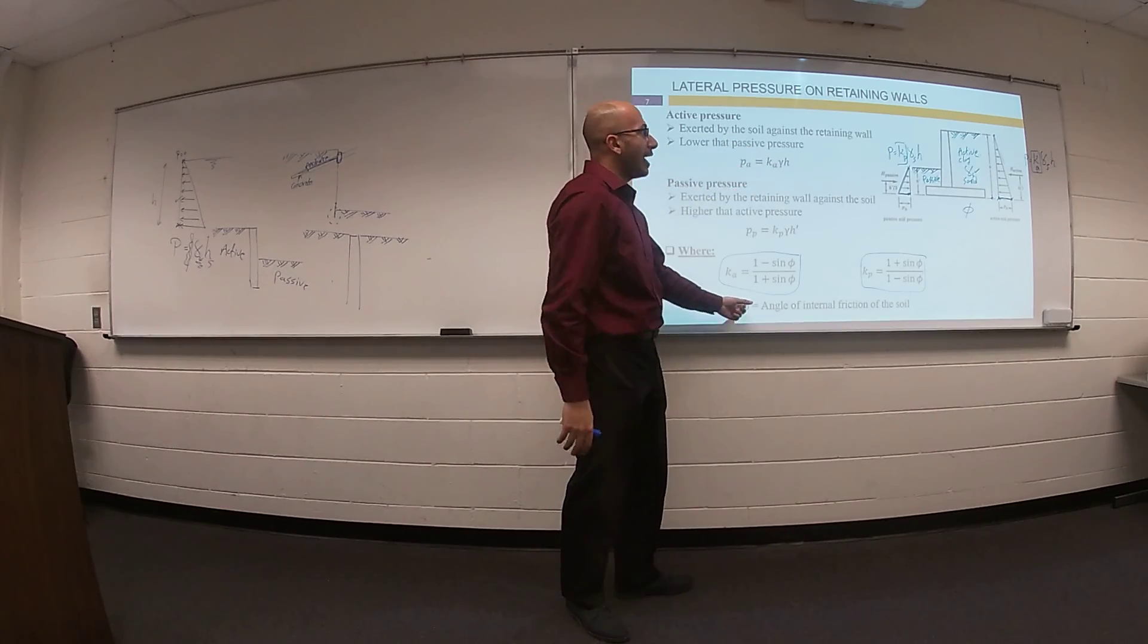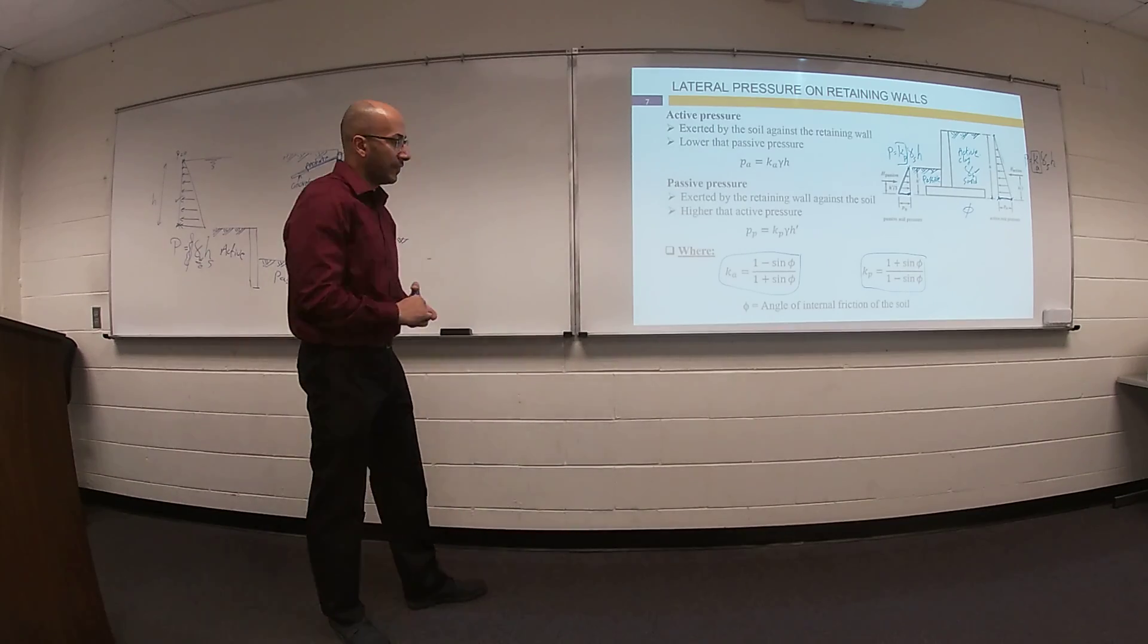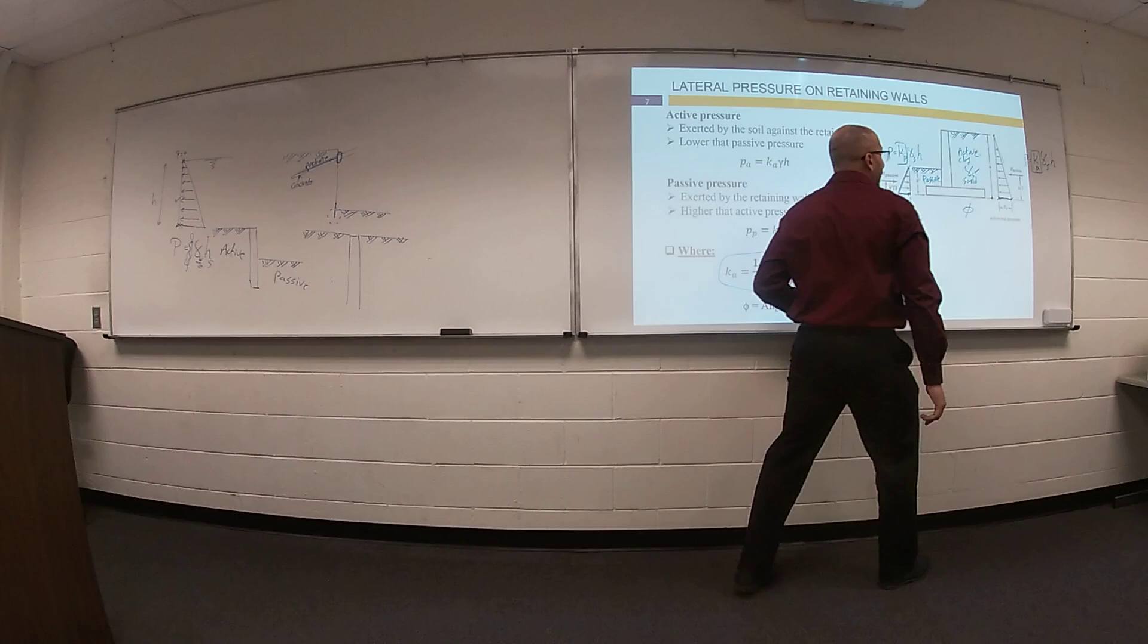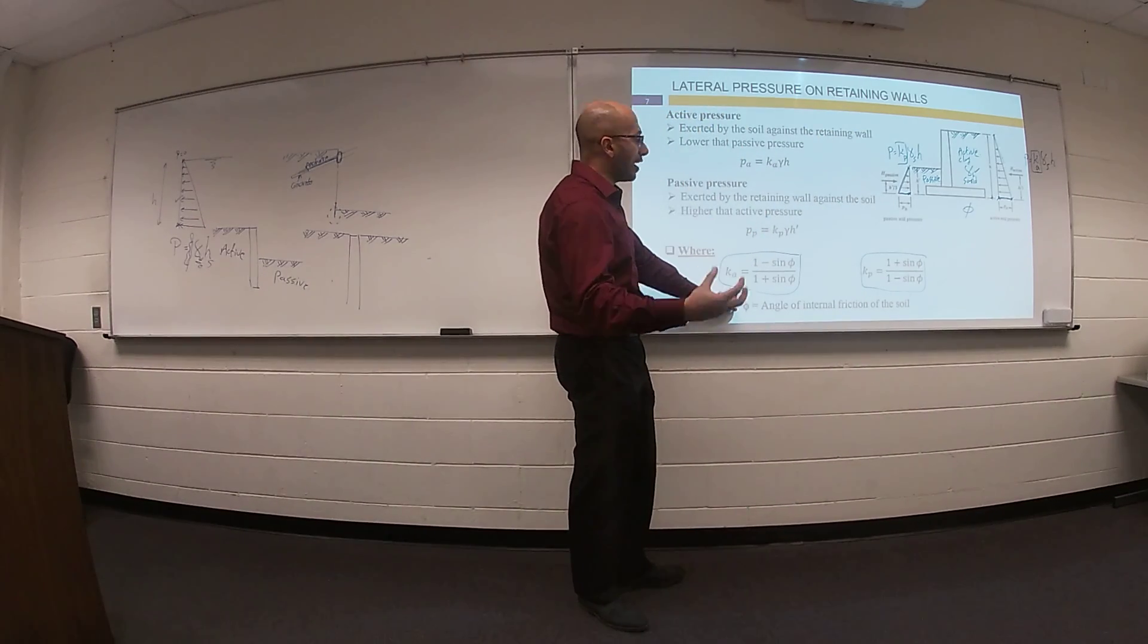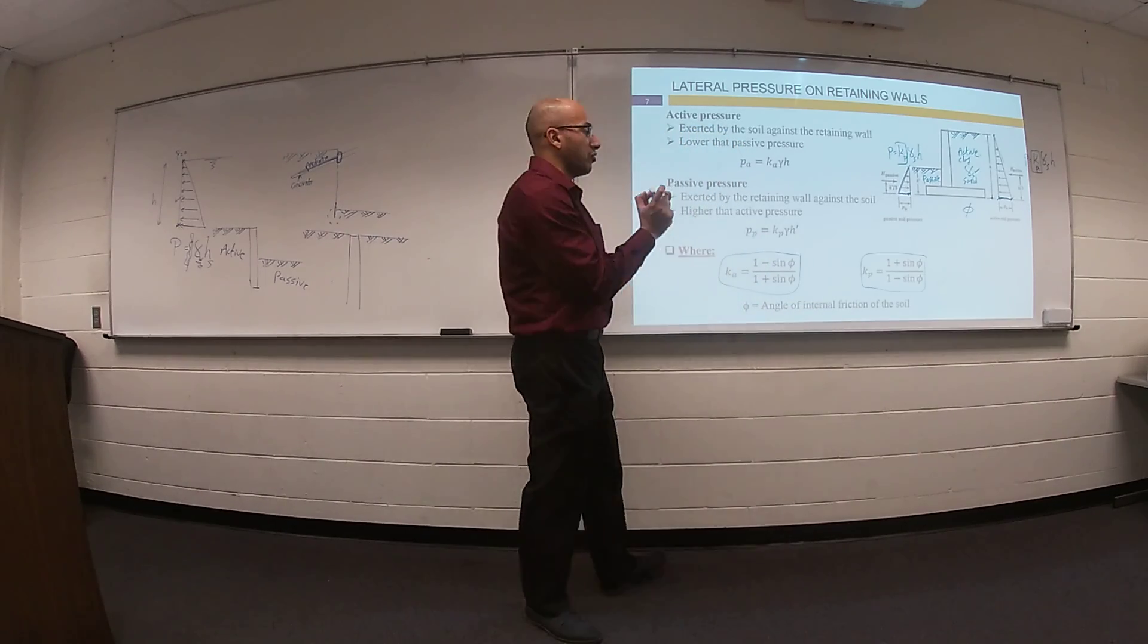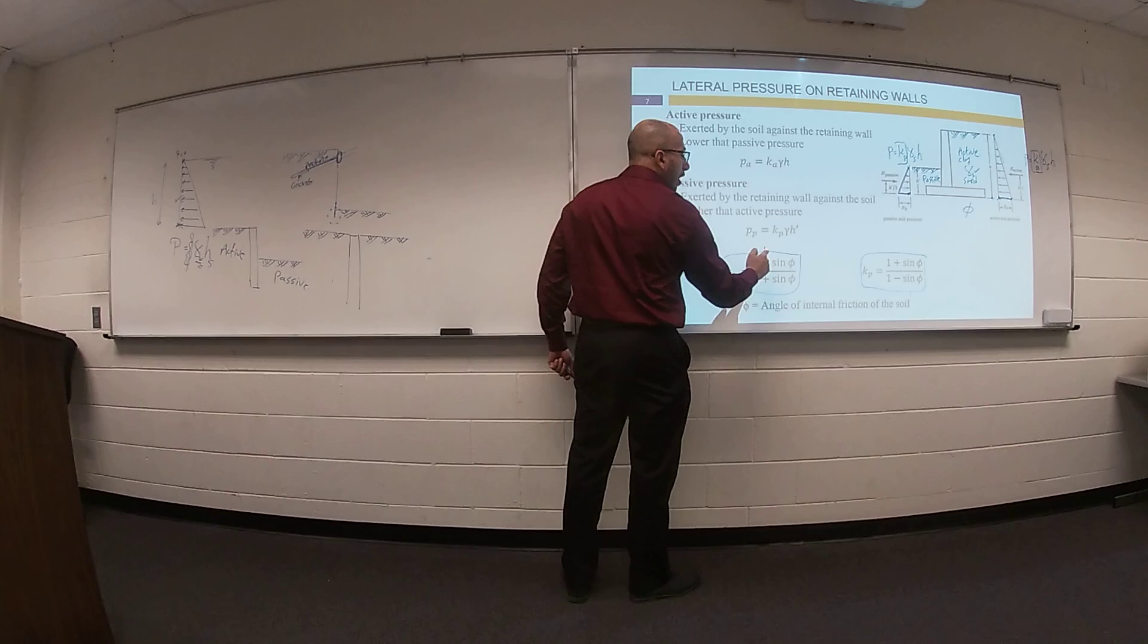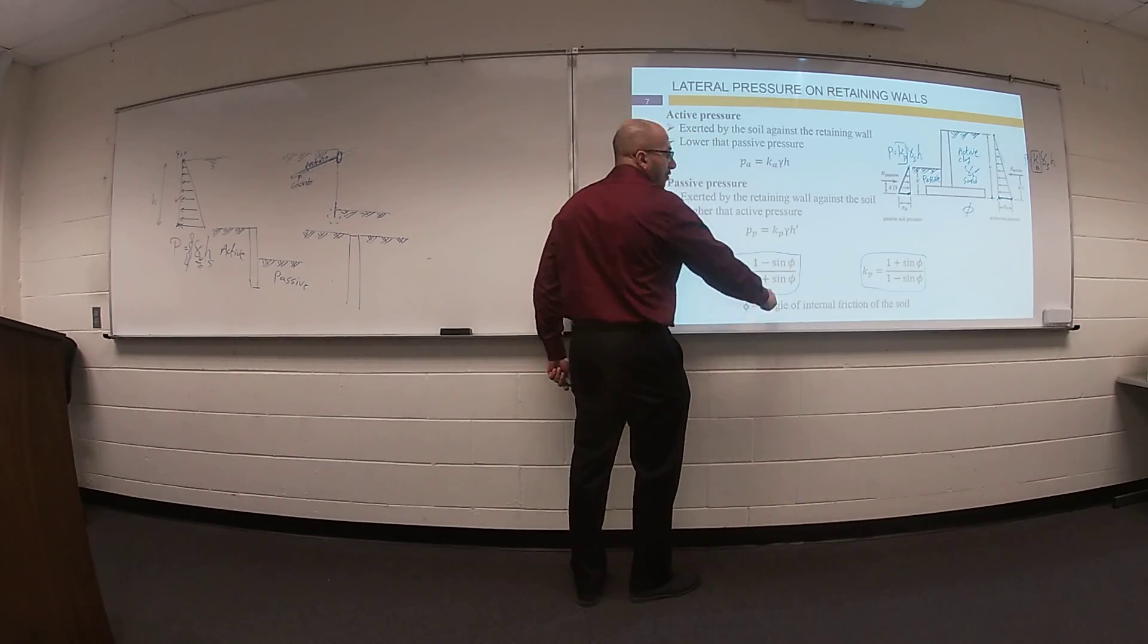You can learn more about these parameters in soil mechanics next semester. So based on what is the type of soil, I can figure out what is the value of phi. If you know what is the value of phi, which is angle of internal friction between particles of soil, I can say, K active equals 1 minus sine phi divided by 1 plus sine phi.